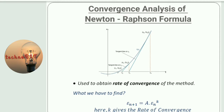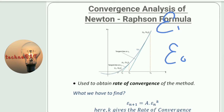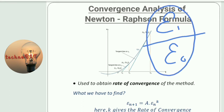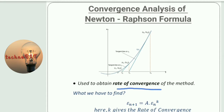In each step, in each iteration, how much closely we are going towards the root — that is called convergence analysis, and that can be measured with the help of the error. Suppose the error associated with x naught is epsilon naught, and error associated with the first iteration x1 is epsilon1. The ratio will give the relation between these two values. In general, we are forming a relation where we get the relation of epsilon n+1 to epsilon n. This k term gives the rate of convergence.